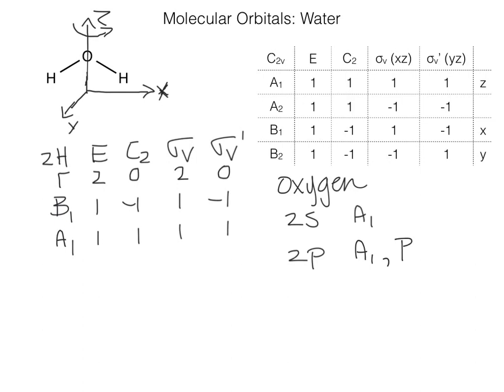So for oxygen we have a1, b1, and b2 orbitals. Now we'll take a brief pause before combining them to make the molecular orbital diagram. We will see that the bonding orbitals are going to be a1 and b1 orbitals, and then we have a non-bonding b2 orbital because it does not match any symmetry on the hydrogen atoms.